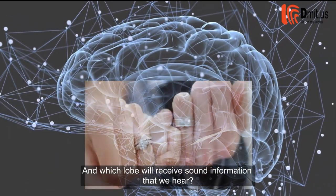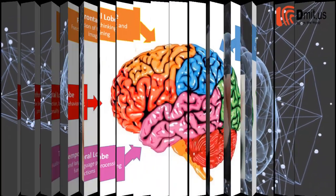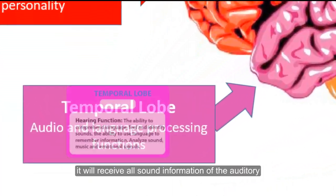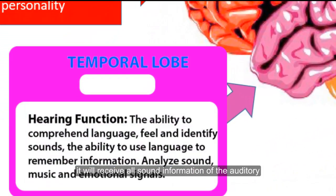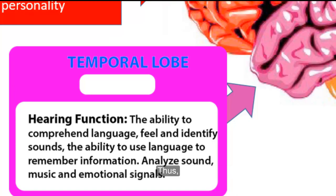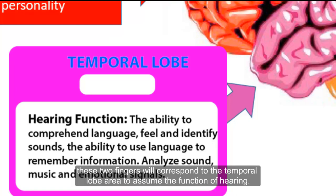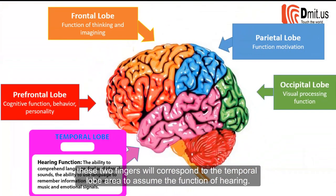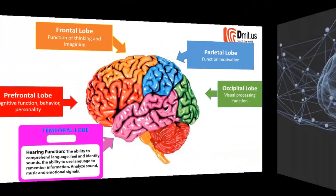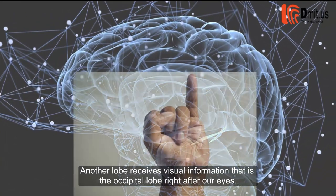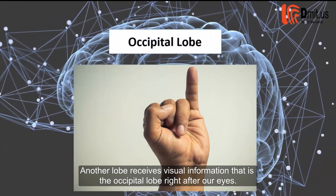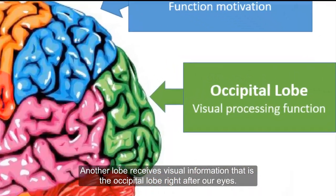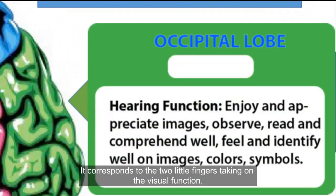Which lobe will receive sound information that we hear? It is the temporal lobe — it will receive all sound information of the auditory, and it corresponds to the two ring fingers. Thus, these two fingers correspond to the temporal lobe area and assume the function of hearing. Another lobe receives visual information — that is the occipital lobe right at the back of our heads. It corresponds to the two little fingers, taking on the visual function.